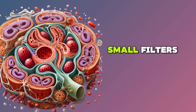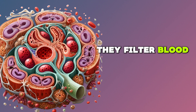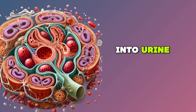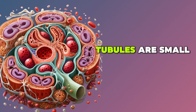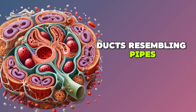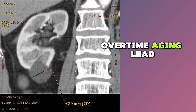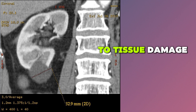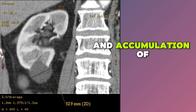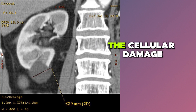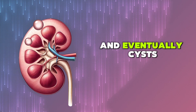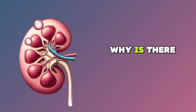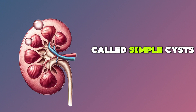The main question is why cysts develop. The kidney contains small filters called tubules, which filter blood into urine. Tubules are small ducts resembling pipes. Over time, aging leads to tissue damage, and the accumulation of this cellular damage causes obstruction of these small ducts, eventually resulting in cyst formation.